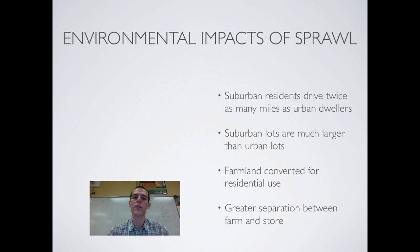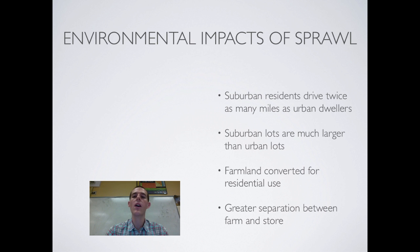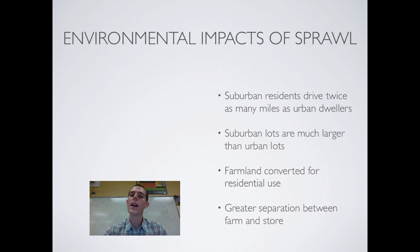Second, suburban lots are much larger than urban lots. Out in the suburbs you can usually get a really big house with a big yard, whereas within the city there are land constraints. As you use up land, you take farmland and convert it to residential use, and you destroy forest habitat, prairie habitat, or farmland. As the city grows out across the farmland, it pushes farms further away from the main city, meaning food has to travel further, resulting in more miles driven, more gas used, and more carbon dioxide emitted.